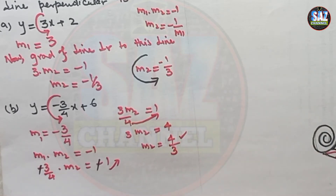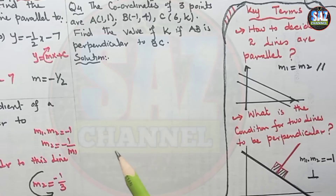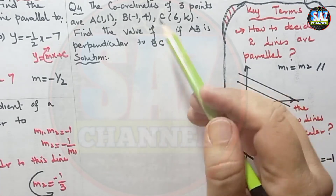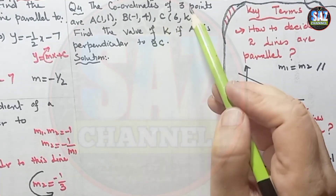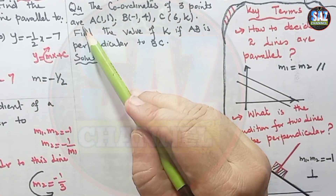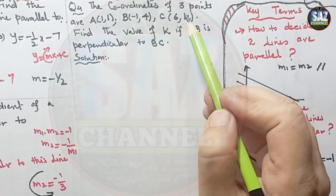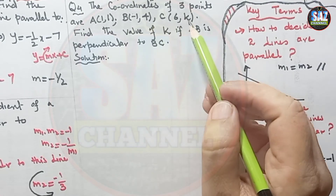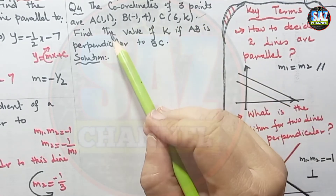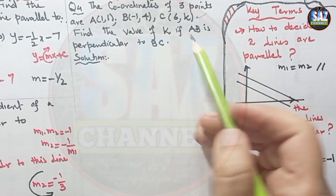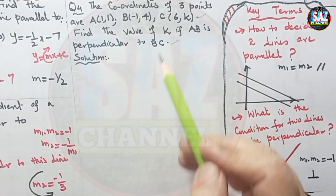Question 4 says: the coordinates of three points are A(1, 1), B(−1, 4), and C(6, k). Find the value of k if AB is perpendicular to BC.